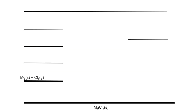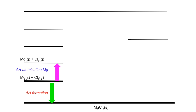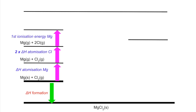Now we'll look at a slightly more complicated example: magnesium chloride. Again, the elements and the ionic lattice are populated. There's the enthalpy change of formation. Just as before, we atomize the magnesium to get a gaseous magnesium atom. Notice here we have Cl₂ — a full mole, not half — so we're going to produce two moles of gaseous chlorine atoms: that's two times the atomization of chlorine. We then ionize magnesium to its 2+ ion, which requires both the first and second ionization energies.